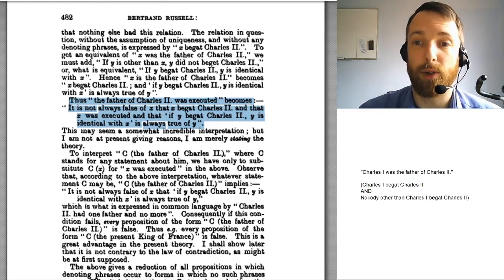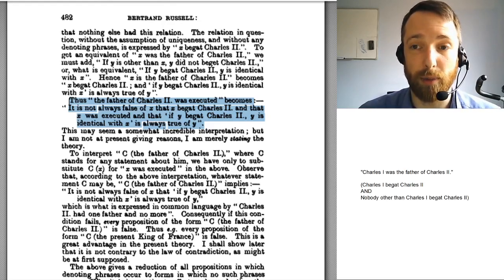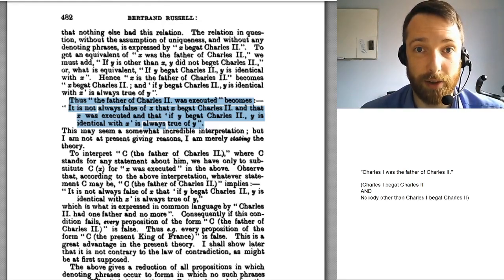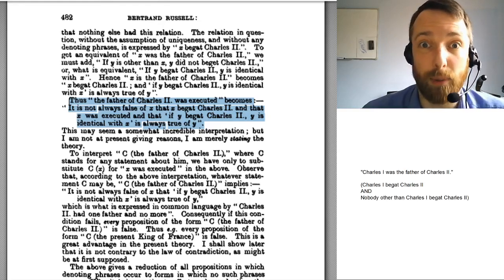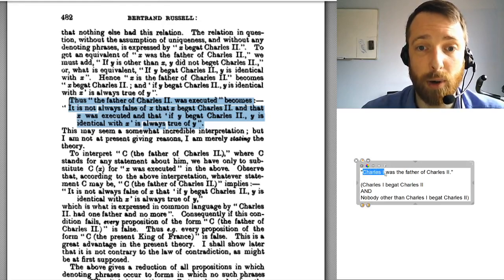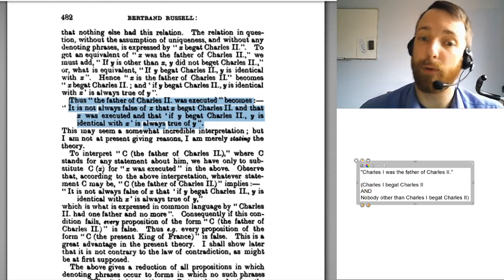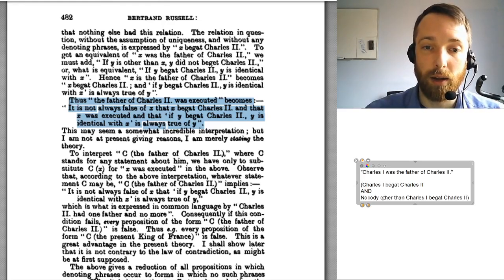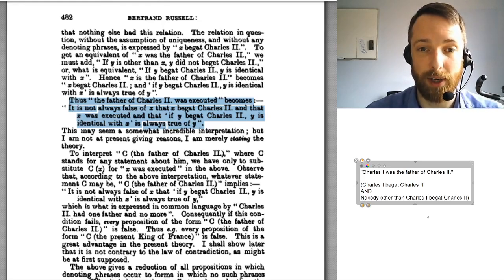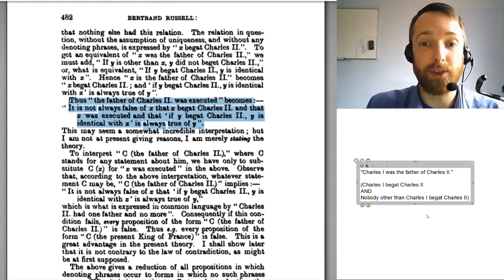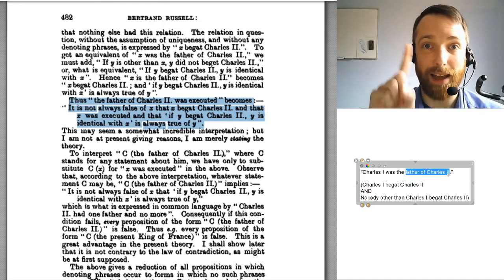Let's talk about Russell. Let me draw your attention to the highlighted bit of the paper. We're going to build up to that — it tells you what Russell thinks is going on with a sentence like 'the father of Charles II was executed.' Let me build up to that with some other sentences. Over here on the whiteboard, I've started with the sentence: 'Charles I was the father of Charles II.' Russell thinks this sentence says two things: first, Charles I begat Charles II, and nobody else begat Charles II. Charles I is the unique person who begat Charles II. That's what Russell thinks the word 'the' does — it tells you not just that there's somebody who satisfies the description, but that there's exactly one, a unique person.